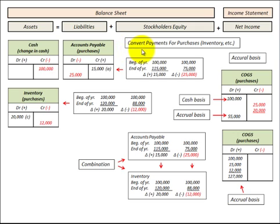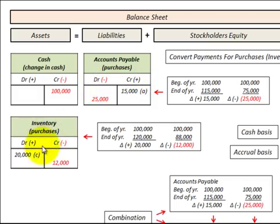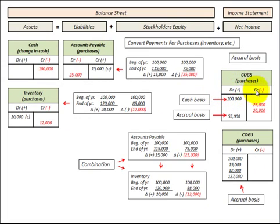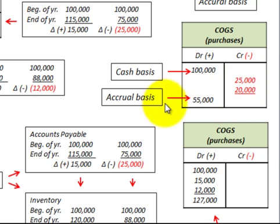To summarize how we converted our payments for purchases of inventory and other materials from the cash basis to the accrual basis: we used our accounts payable, which is a liability on the balance sheet, and our inventory account, which is an asset on the balance sheet. We had to determine the change in both accounts payable and inventory account for the year. We then took those changes and balanced them with our cost of goods sold or expense account on the income statement. Finally, we took our cash basis and netted out those changes in accounts payable and inventory account, and that net difference is our accrual basis.